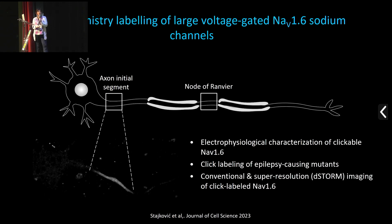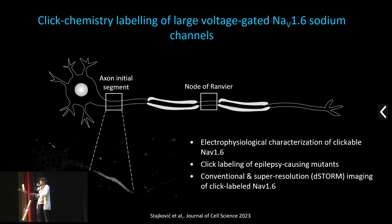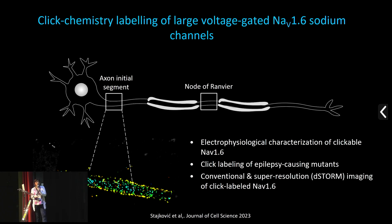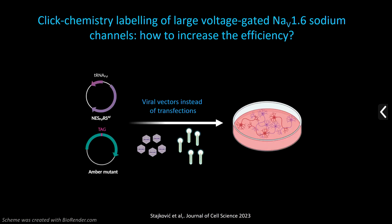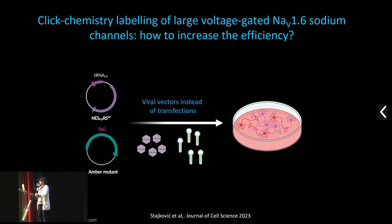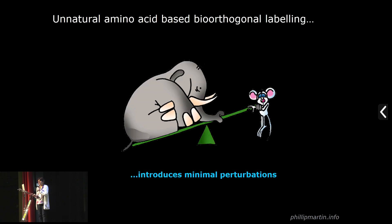Finding permissive sites for unnatural amino acid incorporation is not easy, because many mutations in this protein are associated with epilepsy. This was a project that Nevena, a PhD student in the lab, was working on. We managed to find several variants for click labeling, did electrophysiological characterization to confirm function was not affected, and managed to do click labeling — showing axon initial segments with conventional and super-resolution microscopy of click-labeled voltage-gated sodium channels. To make this possible, we developed AAV viral vectors to get higher efficiency of unnatural amino acid incorporation.